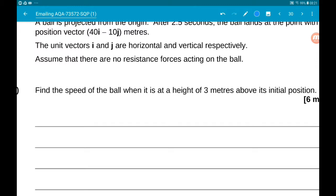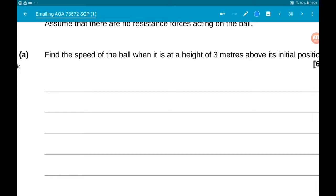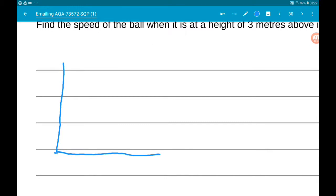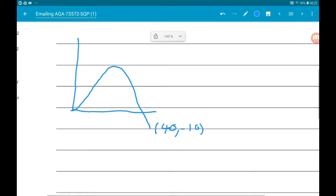Part a wants us to find the speed of the ball when it is three meters above its original position. So this is SUVAT in two dimensions, with two components, horizontal and vertical. It's a good idea to draw a little sketch of what's going on. If we think of this in terms of x and y, our ball is being projected from this point and then it lands at point 40i minus 10j. In terms of x and y, the coordinates would be (40, -10).